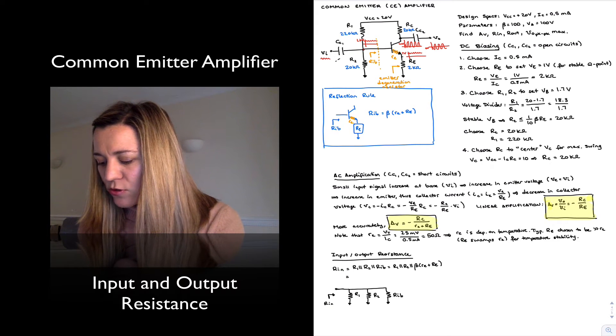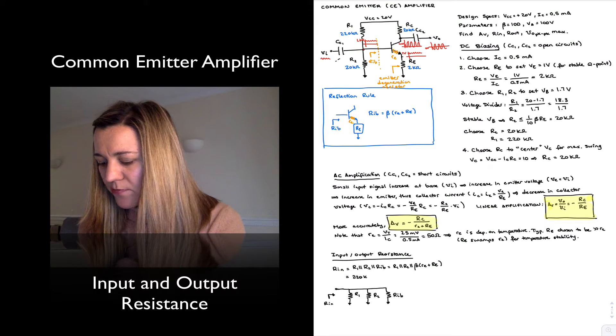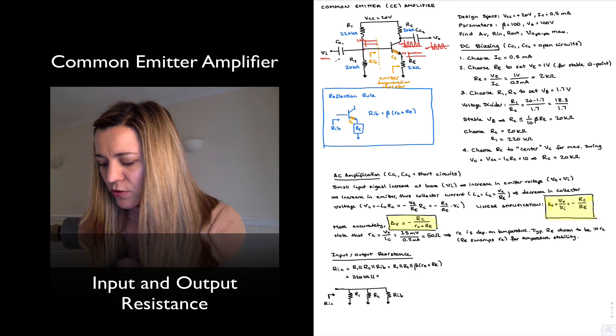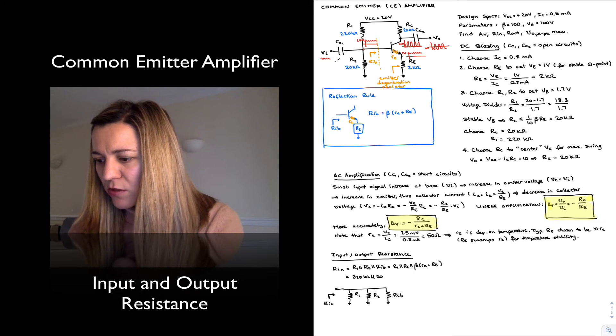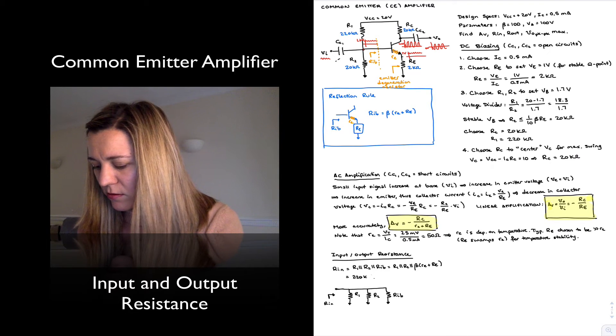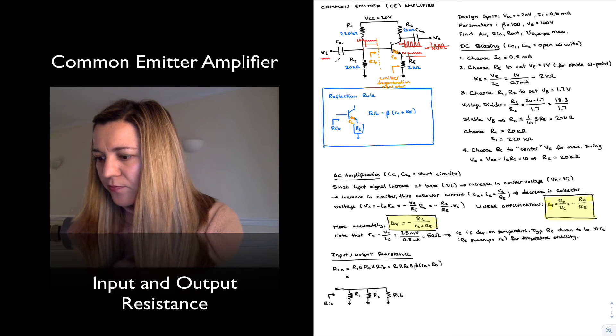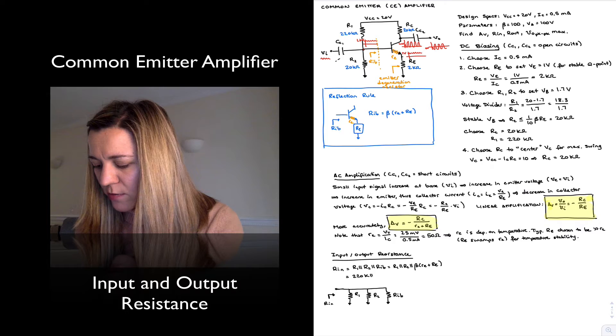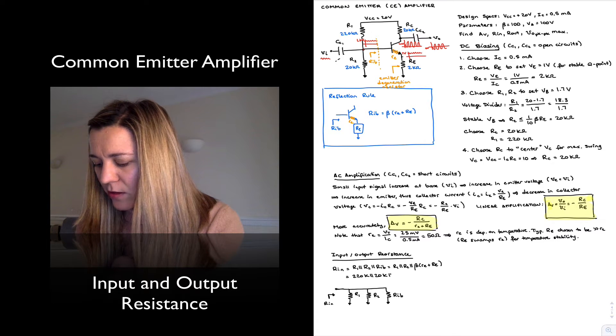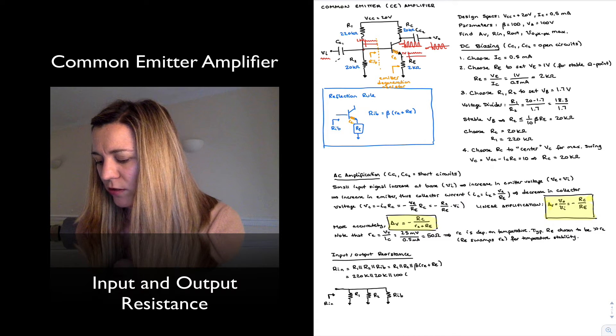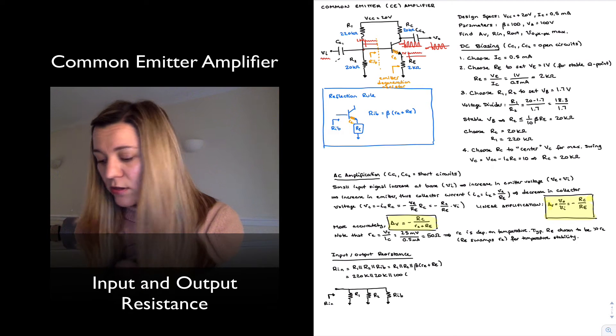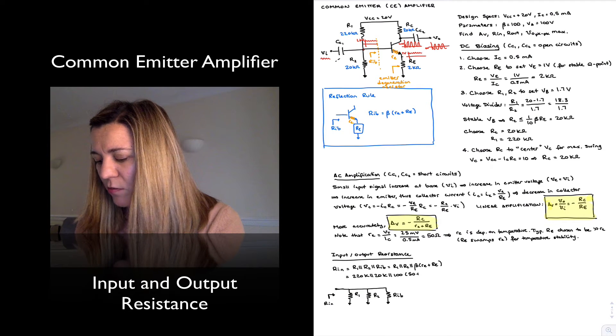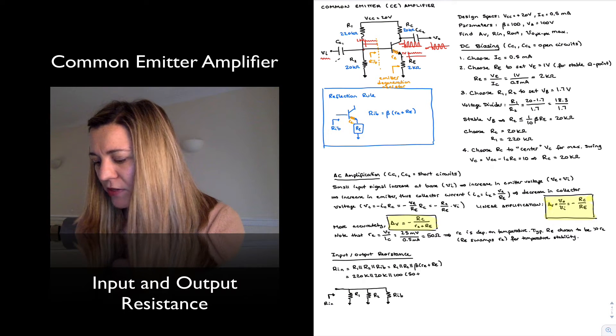I can substitute my values. R1 is 220k, R2 is 20k—I'm going to skip the units just to make things a little bit more condensed. So 220k in parallel with 20k in parallel with 100 times little re we just calculated to be 50 plus, and capital Re is 2k.